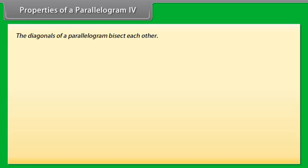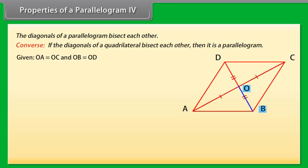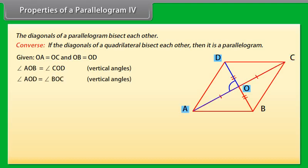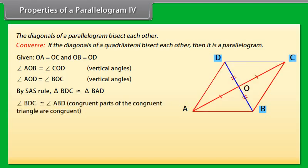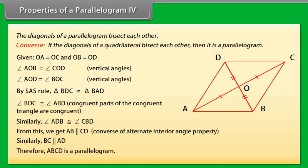The converse says: if the diagonals of a quadrilateral bisect each other, then it is a parallelogram. Proof: Given OA equals OC and OB equals OD. Angle AOB equals angle COD (vertical angles) and angle AOD equals angle BOC. By SAS rule, triangle BOC is congruent to triangle DOA. Therefore angle BDC equals angle ABD (CPCT), giving AB parallel to CD. Similarly, BC is parallel to AD. By the converse of alternate interior angle property, ABCD is a parallelogram.